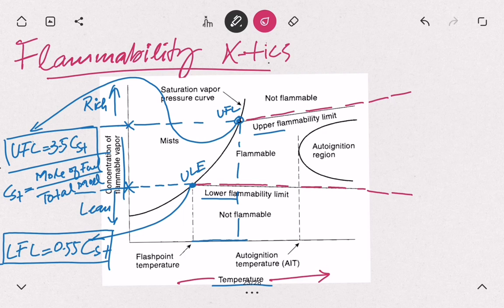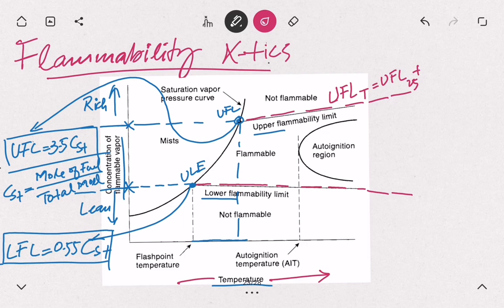To predict this trend, we have an empirical relationship. The upper flammability limit at any temperature equals the upper flammability limit at 25°C, plus 0.75 divided by the heat of combustion, multiplied by the temperature we are studying minus 25°C.